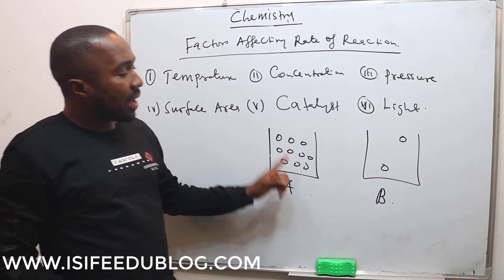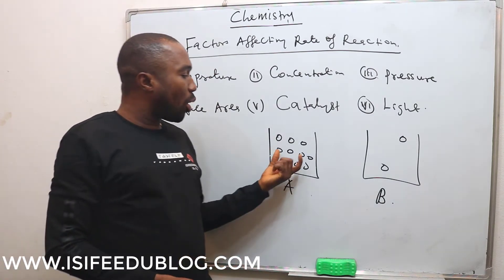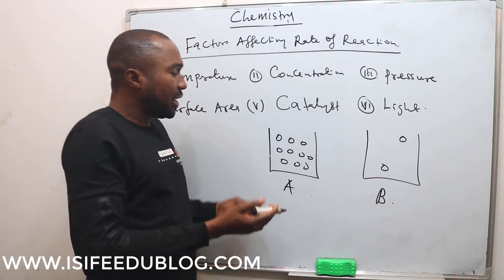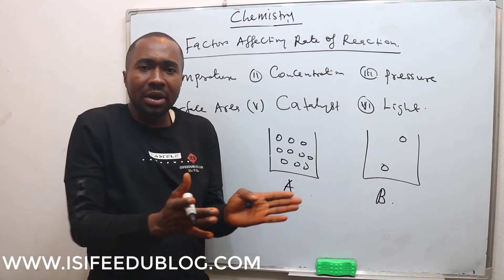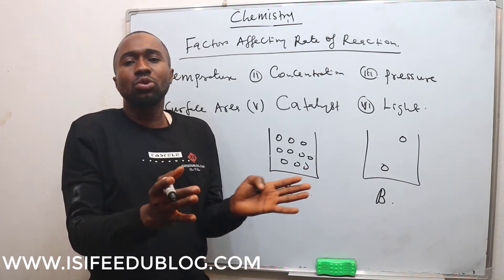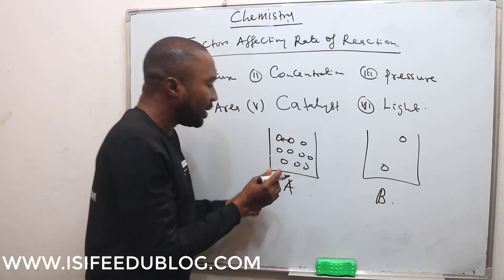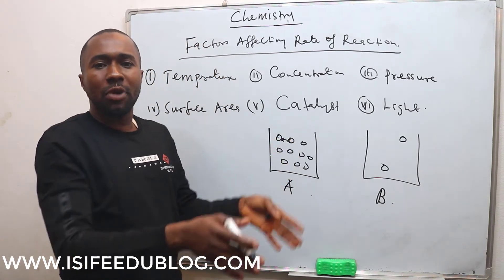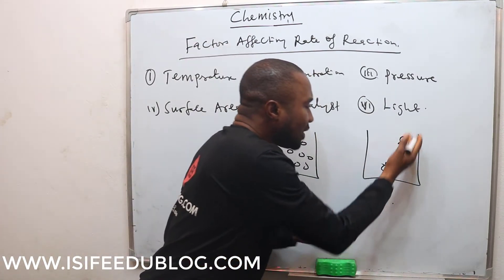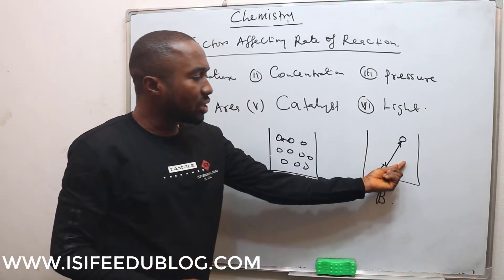The concentration in case A is high, but the concentration in case B is low. Concentration is talking about the number of reactant particles that are there. Since the concentration in case A is high, the reactants are closer to each other. We said that for a reaction to take place, there must be collision between the reactants before a product can be formed. Since the reactants are closer to each other, they can easily collide to form a product faster than those that are far apart.